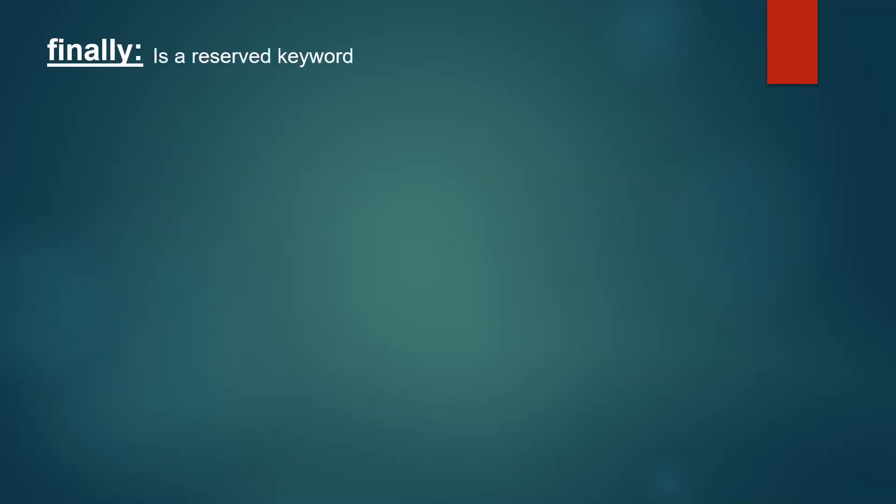Next, let us understand what finally is. Finally is also a reserved keyword and it is a separate section of code which will always be executed, associated with a try-catch block. Whatever code we write in the try block, whether we get any exception or not, irrespective of that, the finally block will be executed.